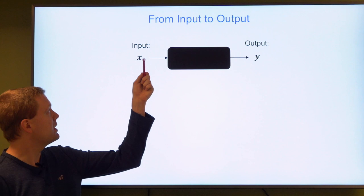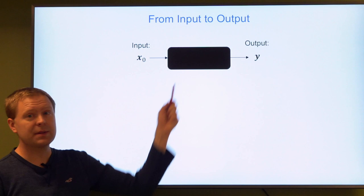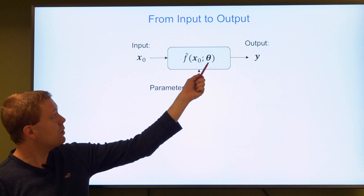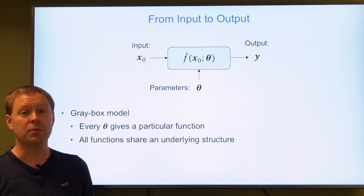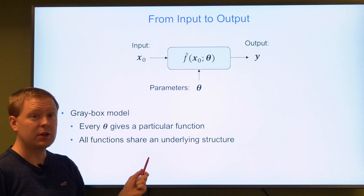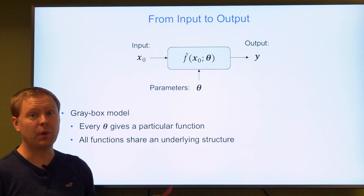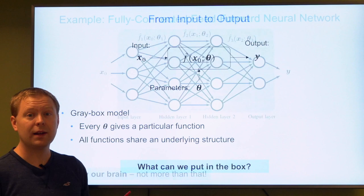Let's start with the basics of neural networks. We start with a box which takes an input x0 and produces an output y — these could be two different vectors or scalars. We fill this box with a function f-hat which takes input x and produces the output. This function is also dependent on a parameter vector we call theta. By doing this we get what we call a grey box model, where each choice of theta gives us a certain function in the box, but all the functions we can produce will have some underlying structure — we cannot generate any conceivable type of function. We have predefined something.